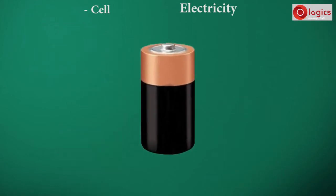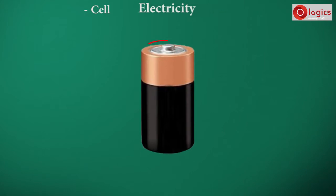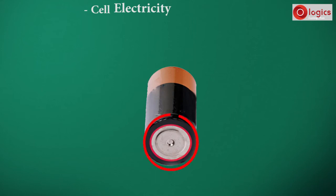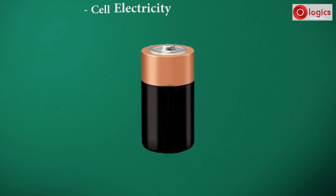A cell is like a sealed cylindrical metal can. The top, as well as the bottom, is fixed with metal caps. One end is the positive terminal, and the other end is the negative terminal.